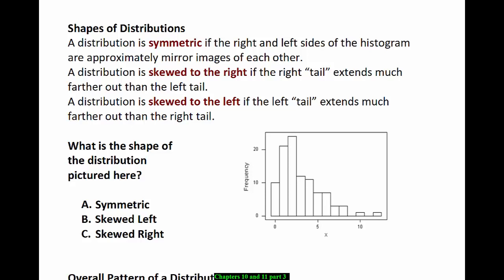A distribution is symmetric if the right and left sides of the histogram are approximately mirror images of each other. We say that a distribution is skewed to the right if the right tail extends much farther out than the left tail of the distribution. And it's skewed to the left if the left tail extends much farther out than the right tail. So the skew goes in the direction of the tail.